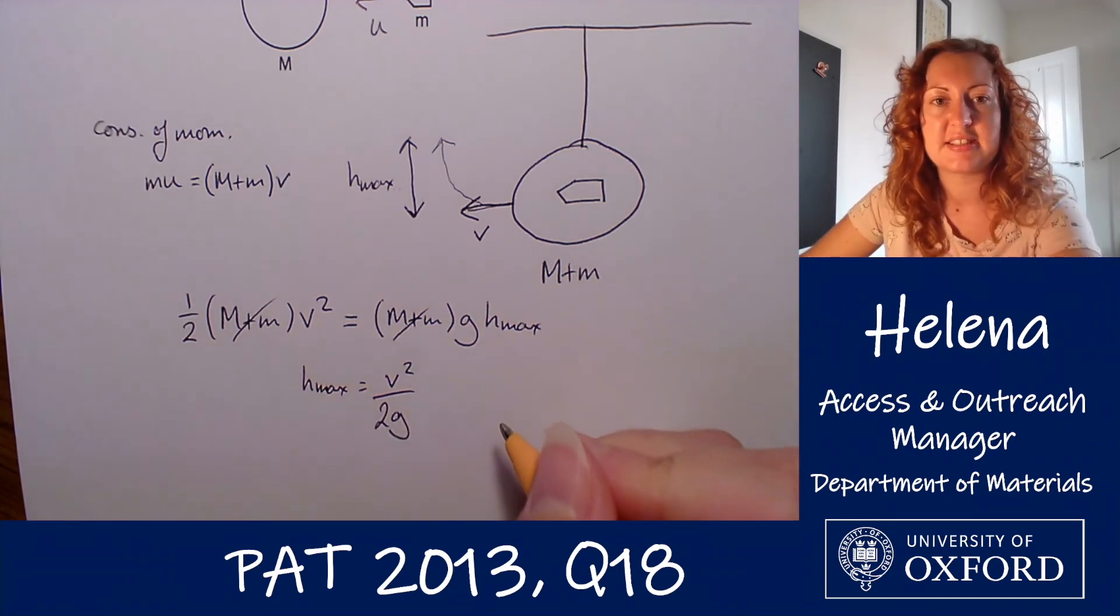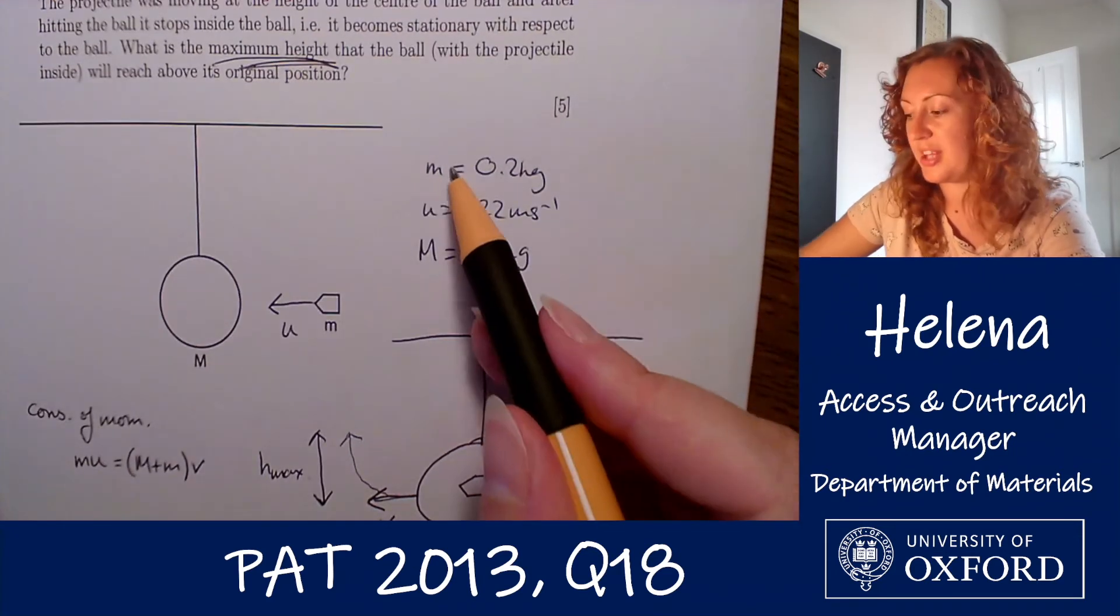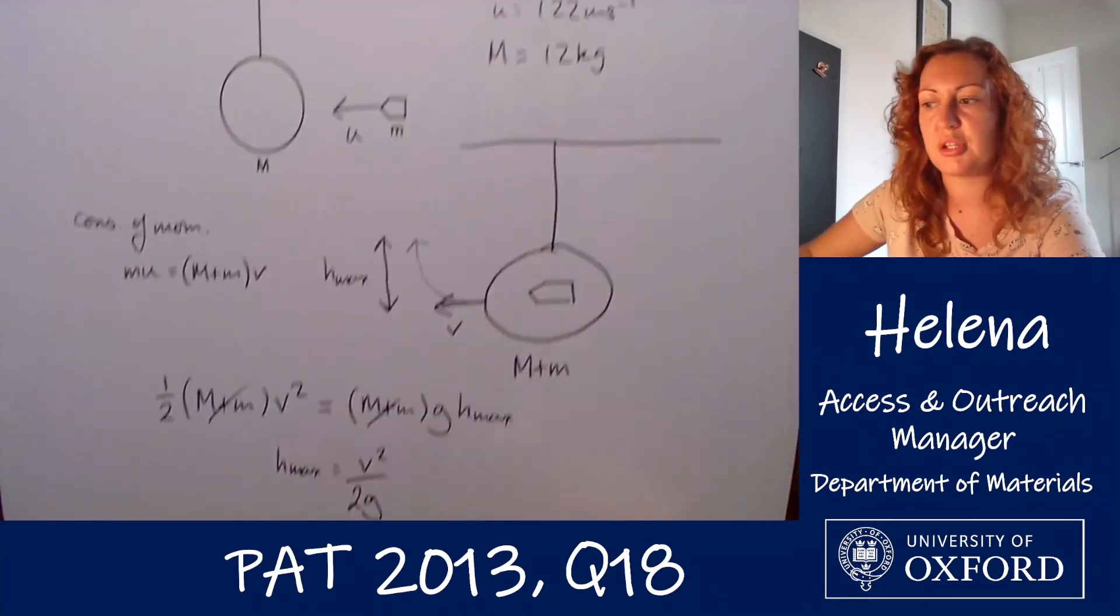So now we just need to find an expression for v here, this velocity following the collision. We're told all the other values, we're told the two masses and we're told u, but we're not told v.